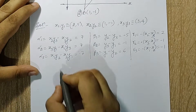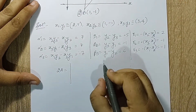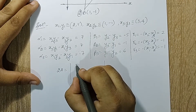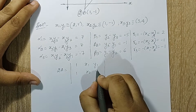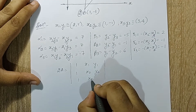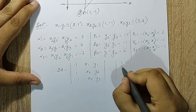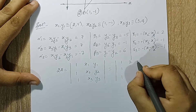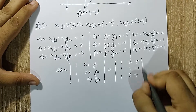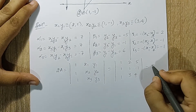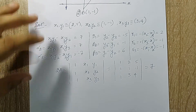Next I'll go for calculation of 2A. If you recollect, it was the modulus of matrix M, where M is: 1, x1, y1; 1, x2, y2; 1, x3, y3. So this is 1, 1, 1; 2, 5; 1, minus 1; 3, 4. When I solve this I get the answer as 7.